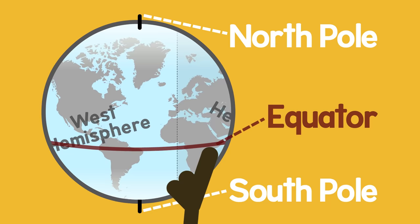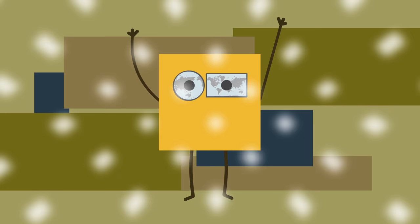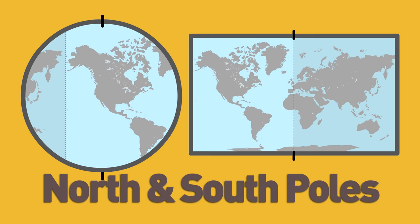If you're looking at a globe or a map of the world and you want to understand it, you've got to know these hemispheres, north and south poles, equator, oceans, continents, and lots and lots of countries.